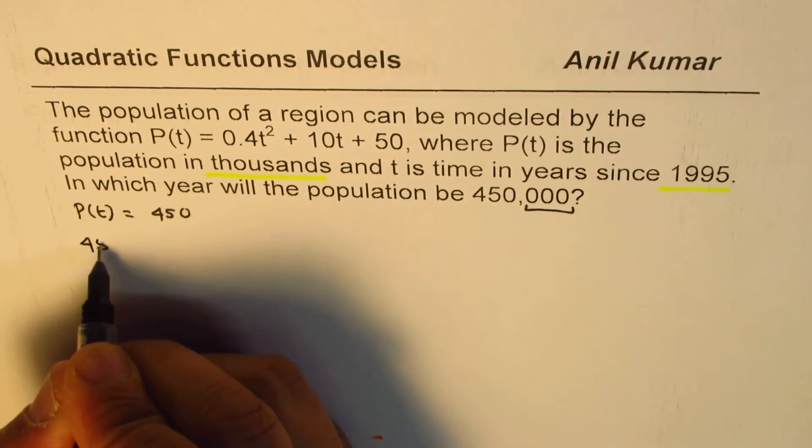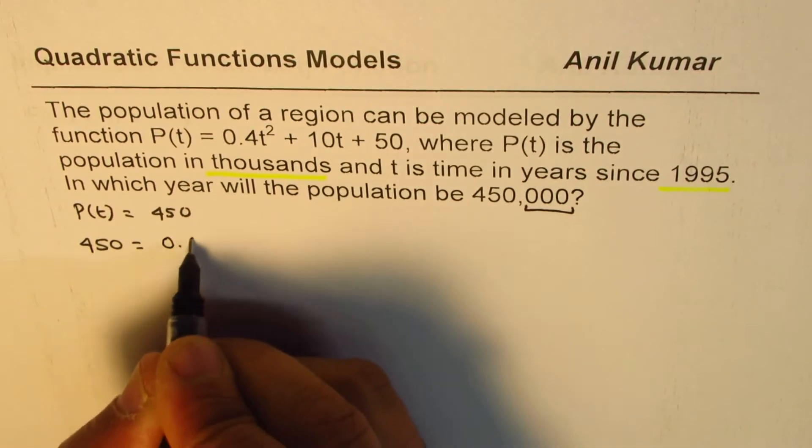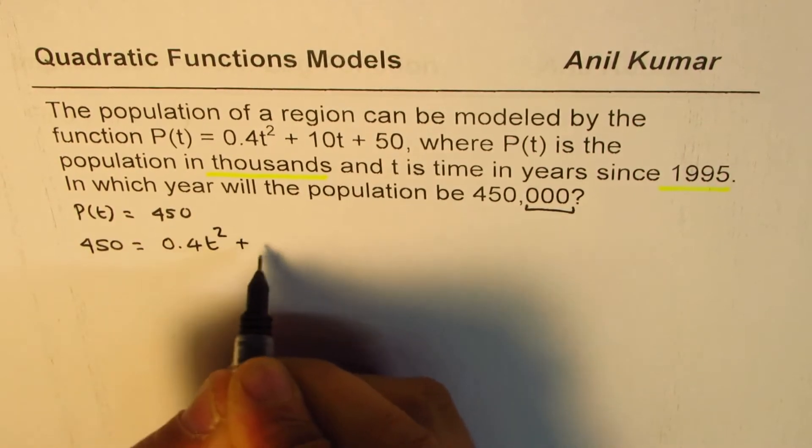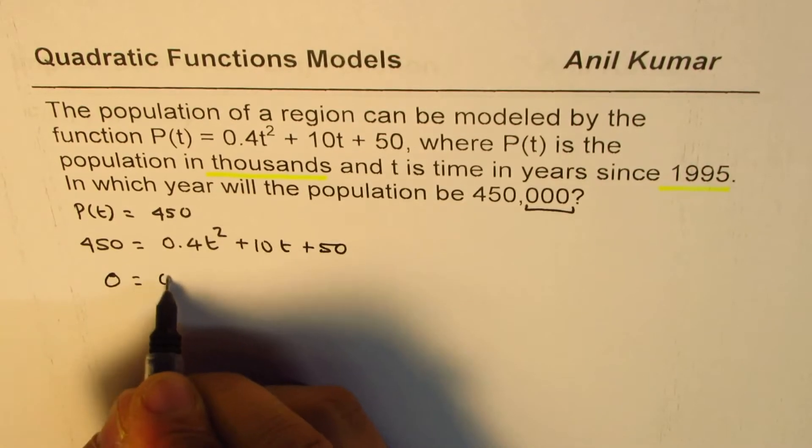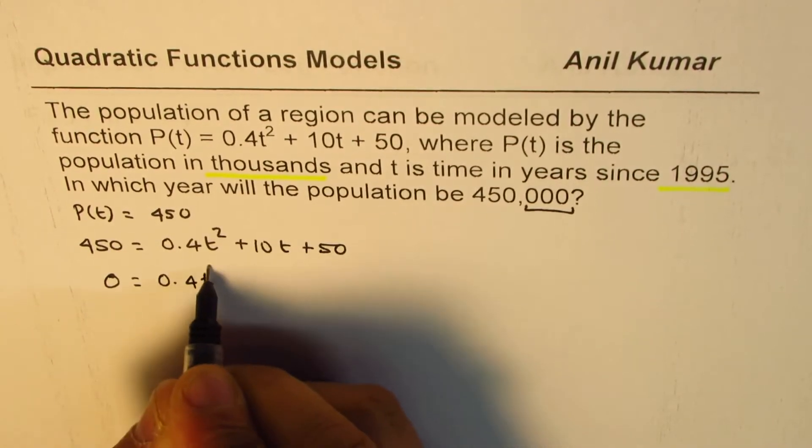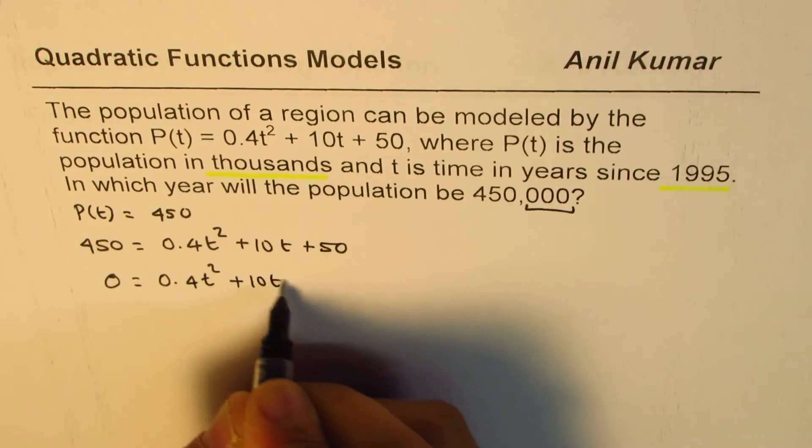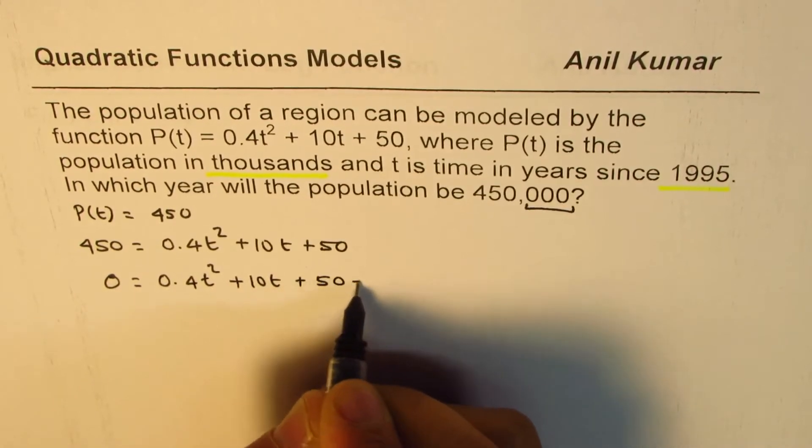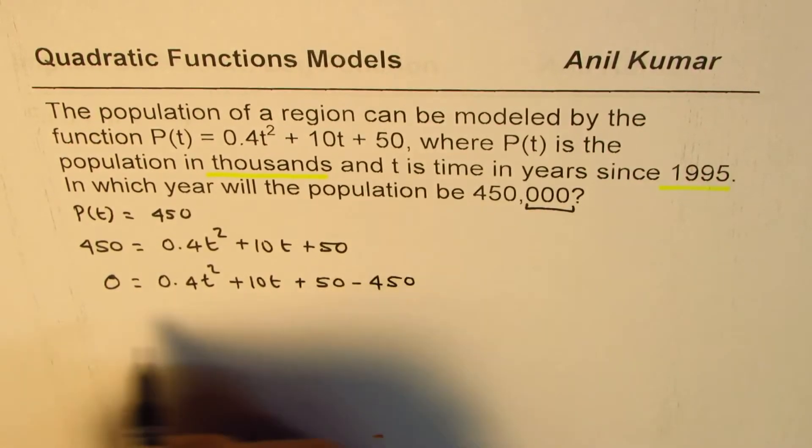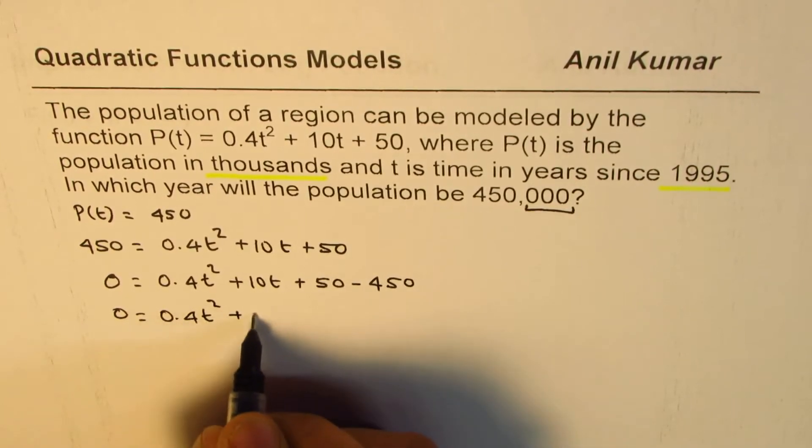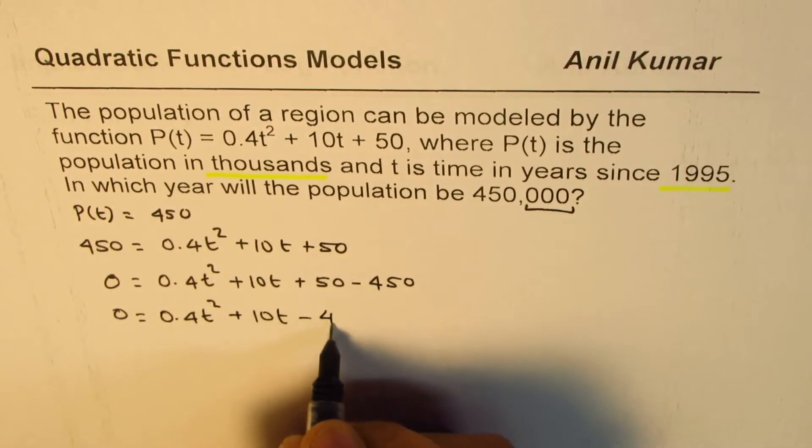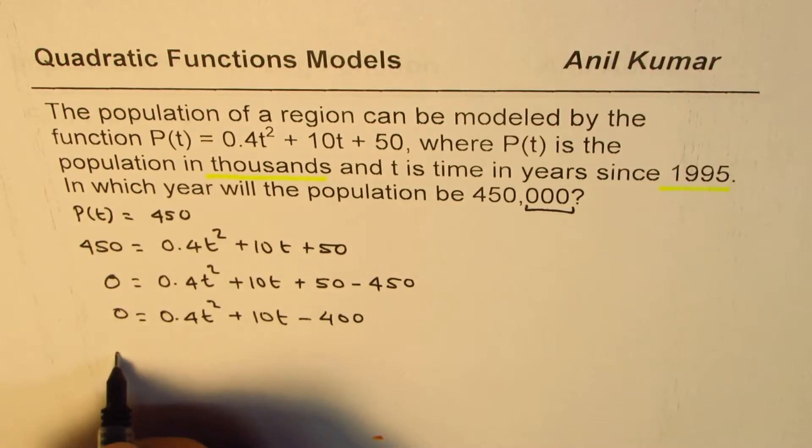So what we have here is 450 = 0.4t² + 10t + 50. Just rearrange: 0 = 0.4t² + 10t + 50 - 450, or 0 = 0.4t² + 10t - 400. And t equals,